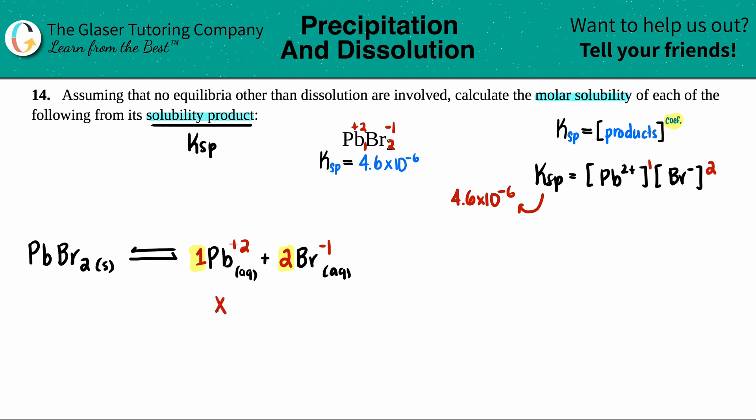But the idea here is that it has to match with the coefficient. So if I bring this one down, one times X is just X. So for Br-, if this is a one to two relationship, whatever I have here, I have to have two times as much. So this would be 2X. And that kind of makes sense because the two has to be brought down.